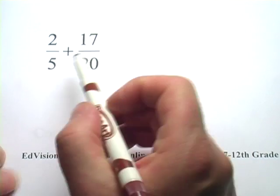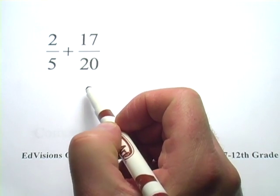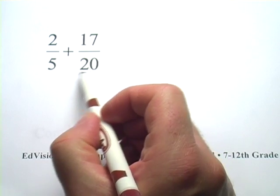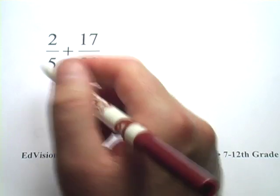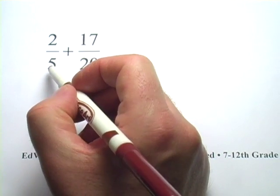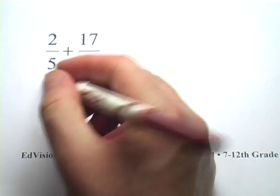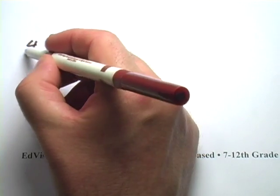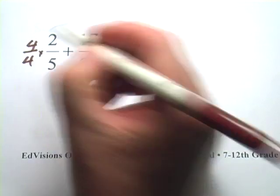Alright, let's try this technique on one more. So we've got two fifths plus seventeen twentieths. What I'm going to want to do is try to get to twentieths over here, and it looks like if I multiply five times four, I can get to twentieths. So I'm going to multiply this whole fraction by this form of one, four over four.